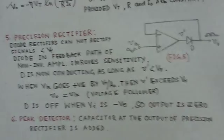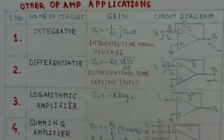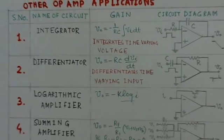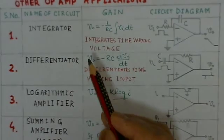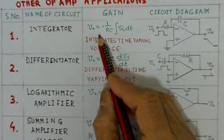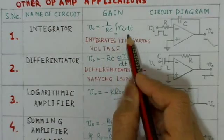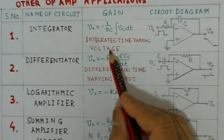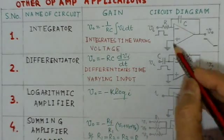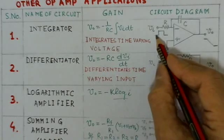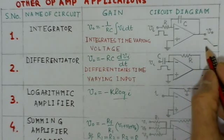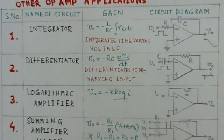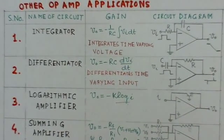Some other well-known op-amp circuits include the integrator, whose output is minus 1 over RC times the integral of VIN dt. This circuit integrates a time-varying input voltage. For example, if a rectangular pulse is applied, we get a ramp output. These ramp voltages find very good applications in oscilloscope time-base circuits.